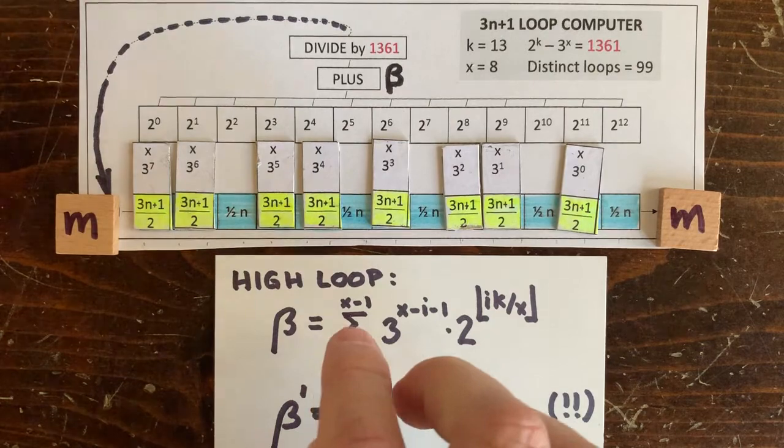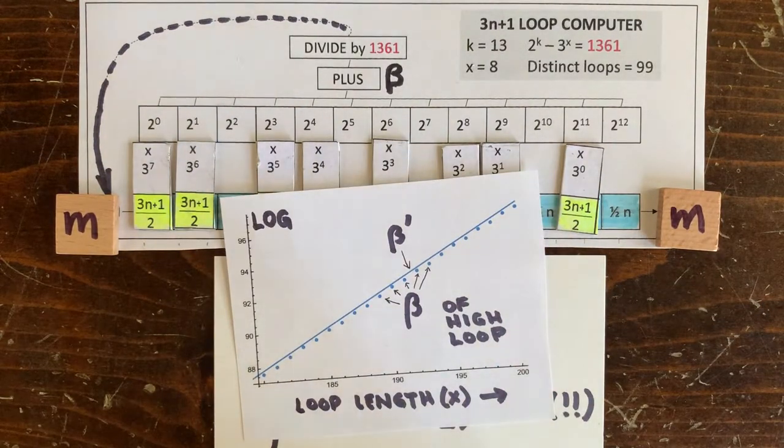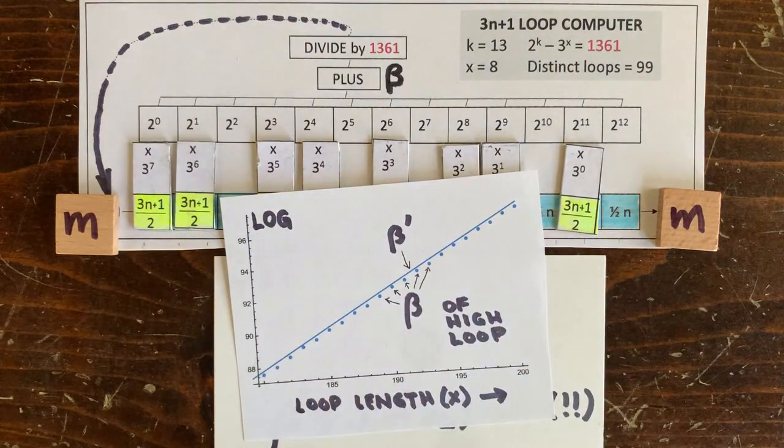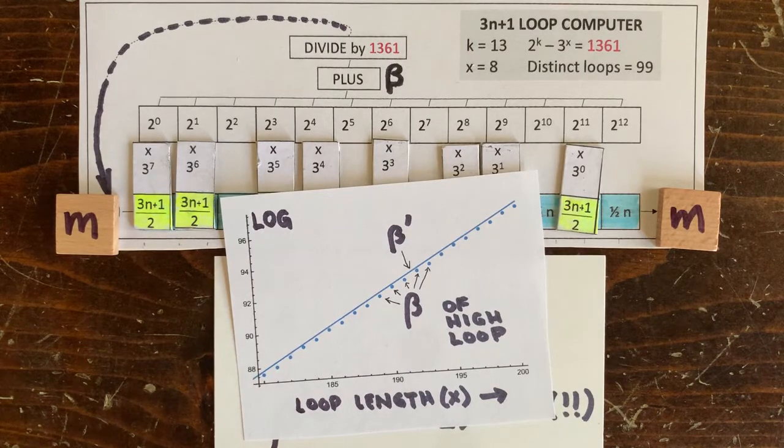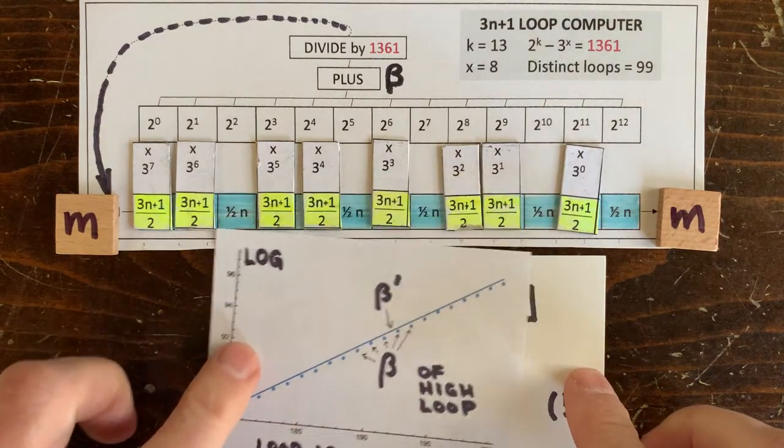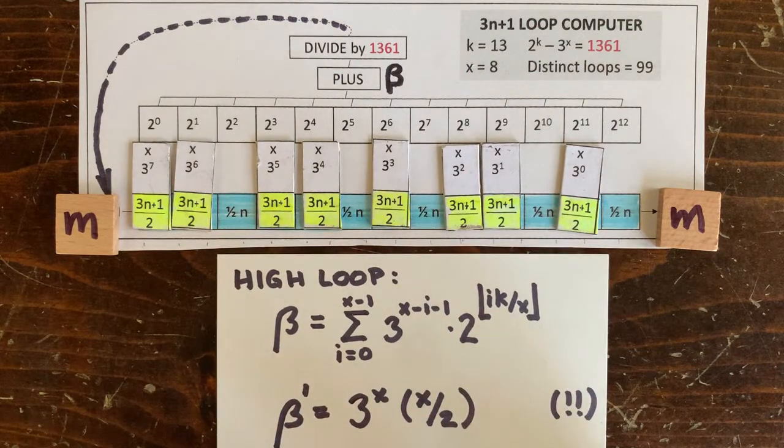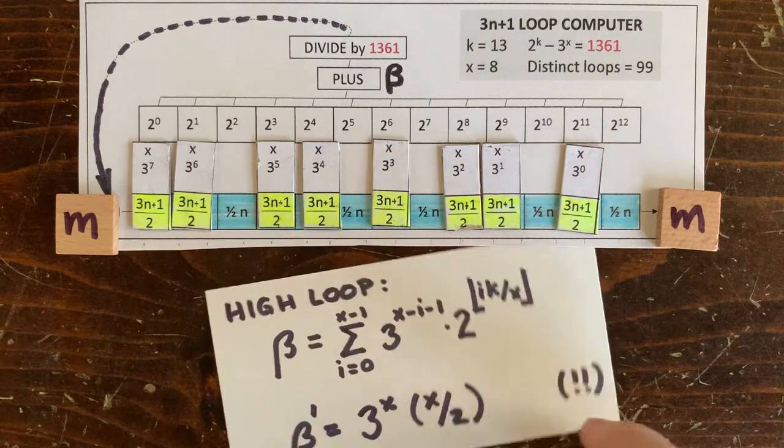And on this chart, we can see the high loop betas for various loop lengths. This is a log of beta. And they bounce around kind of randomly, but they stay pretty close to beta prime. And whoa, beta prime is really well behaved. It's a straight line in log space. So why is that? It's because beta prime simplifies to 3 to the x times x over 2. And that's also freaking amazing.